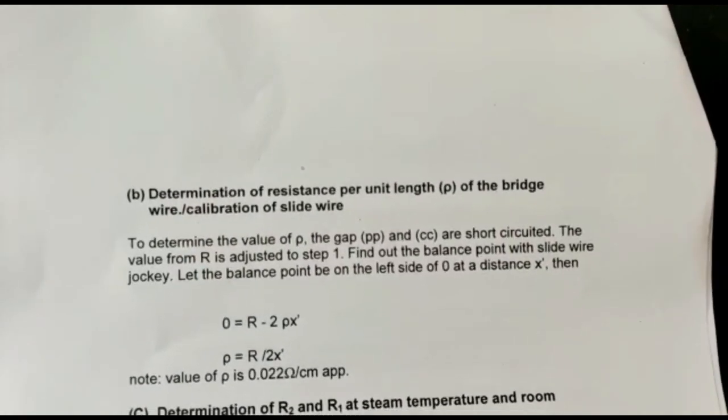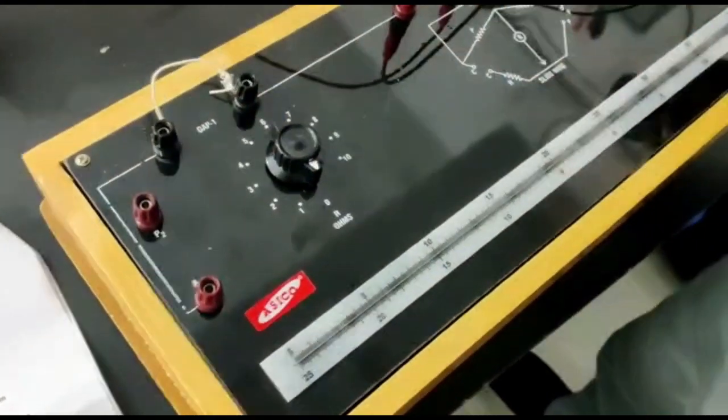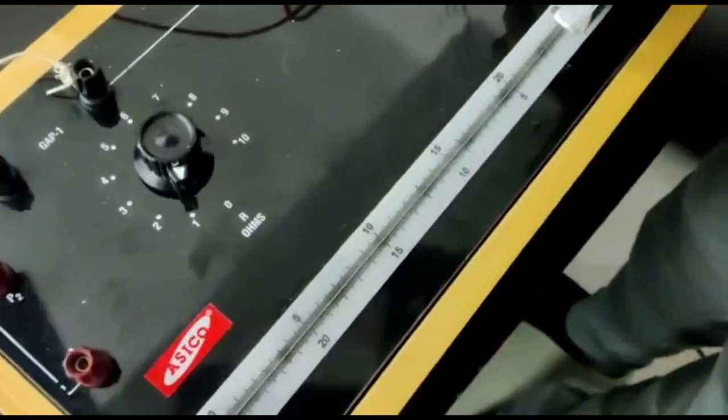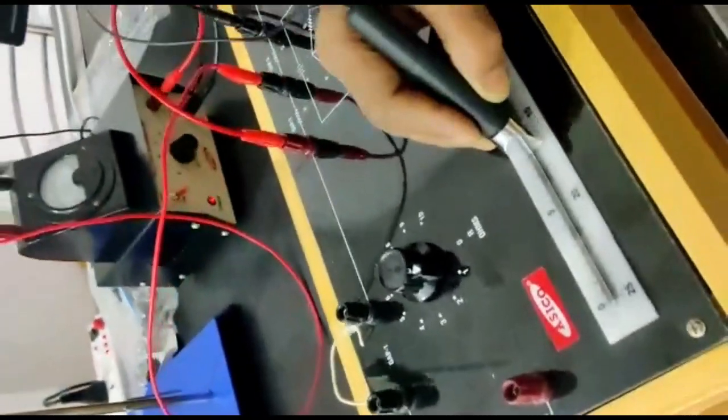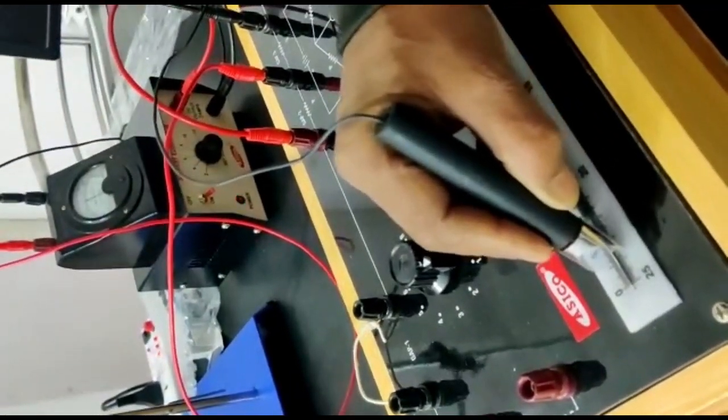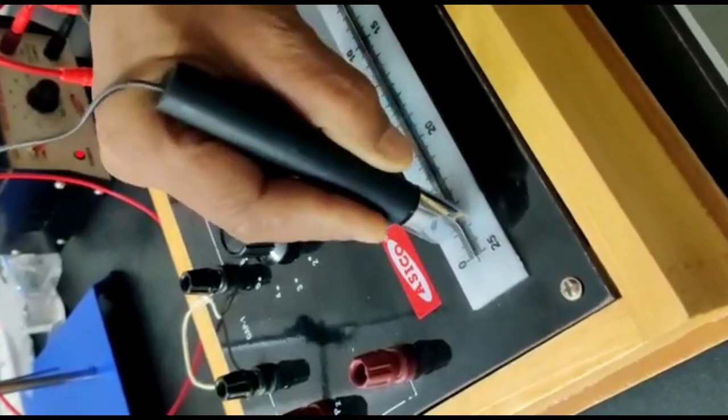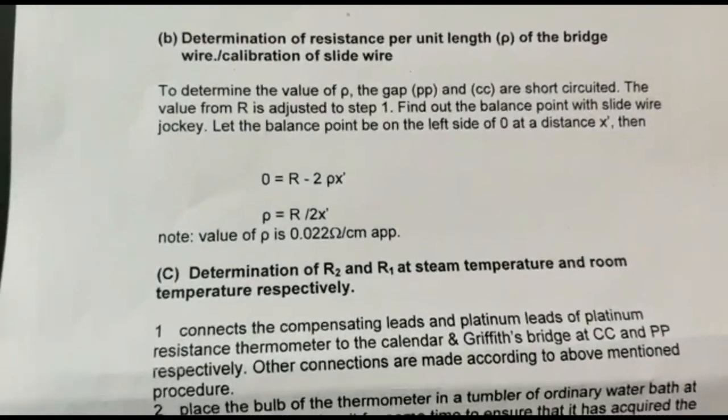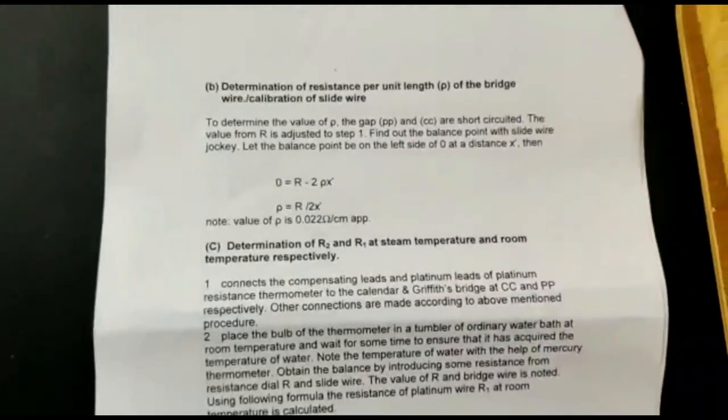Now determination of Rho. The connection will be the same, and we will introduce some resistance at the dial R to 1. With the help of the jockey, we will find out the balance point. So this is our balance point. We will put these values into the formula to calculate Rho, and it will become approximately 0.022 Ohm per centimeter.